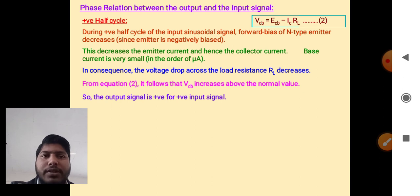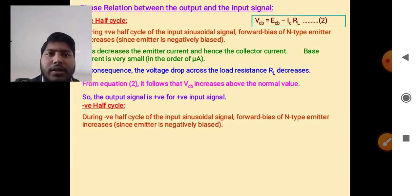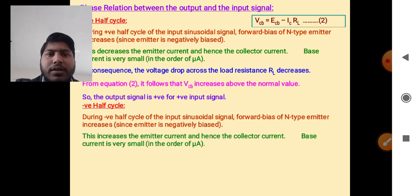During negative half cycle of input sinusoidal signal, forward bias of n-type emitter increases. This increases the emitter current and hence the collector current.